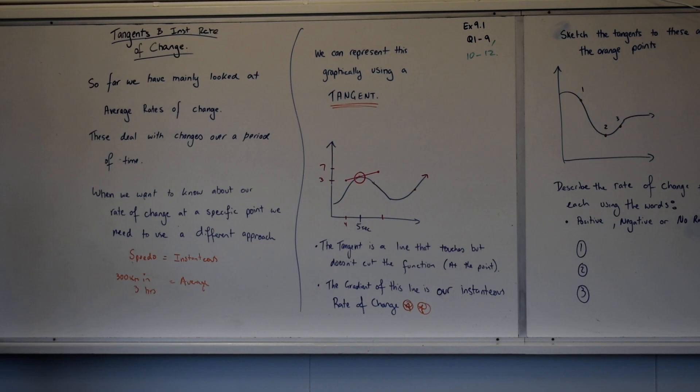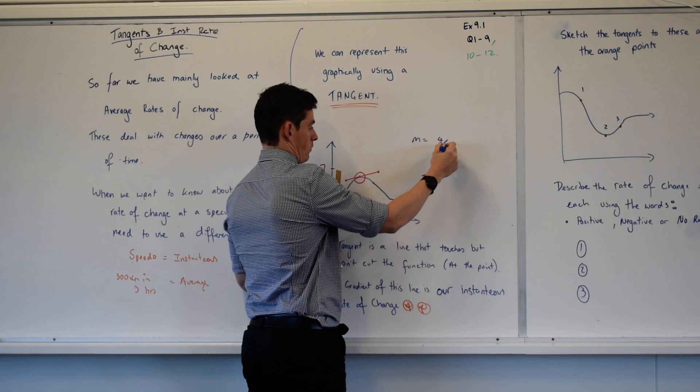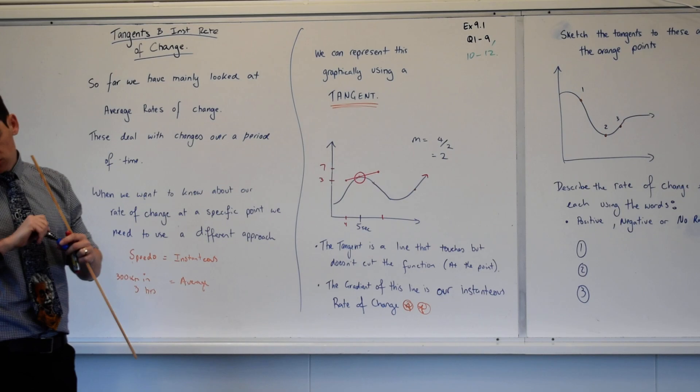How would I calculate my instantaneous rate of change? M equals what? Rise over run. What's my rise? 4 over 2, which equals 2. My gradient there, my instantaneous rate of change is 2.